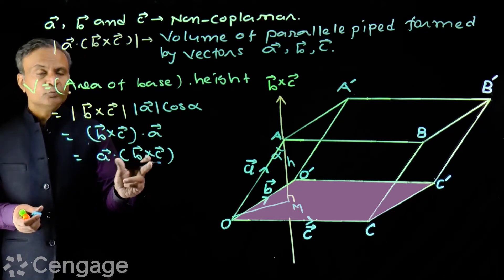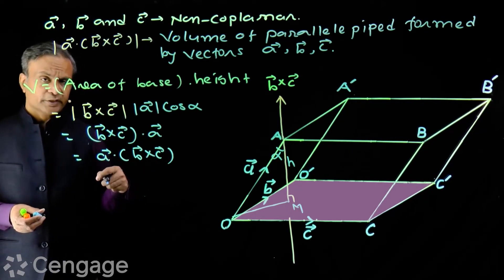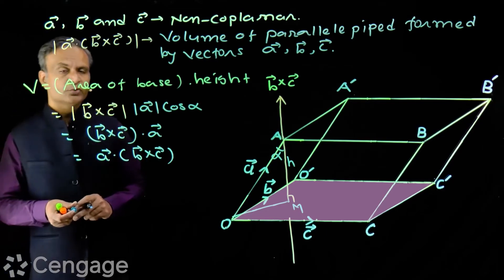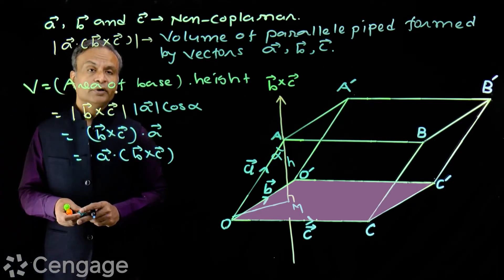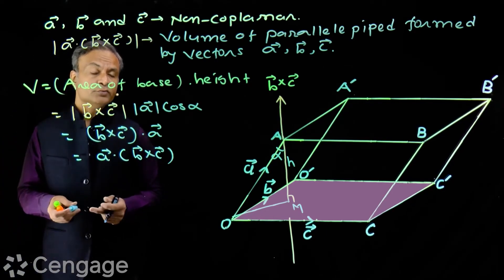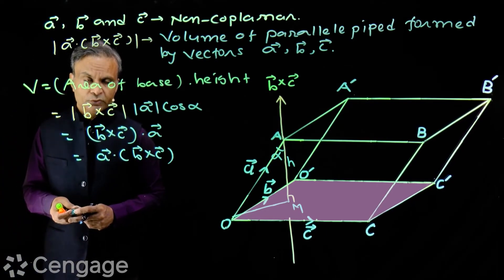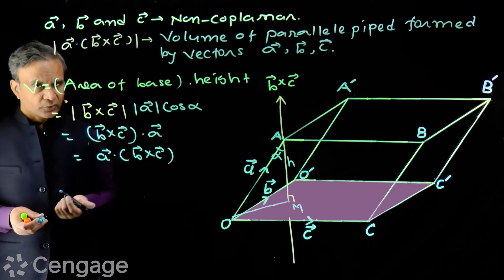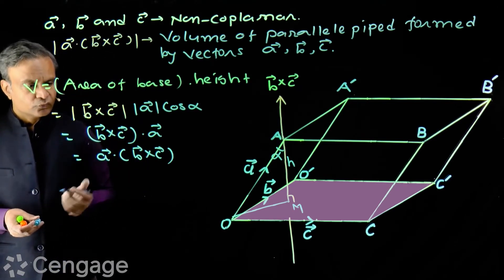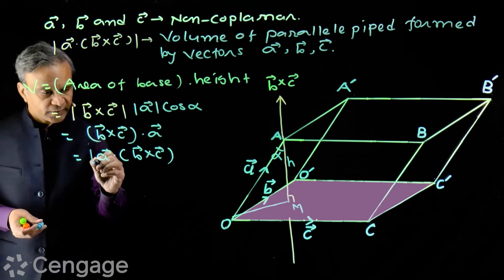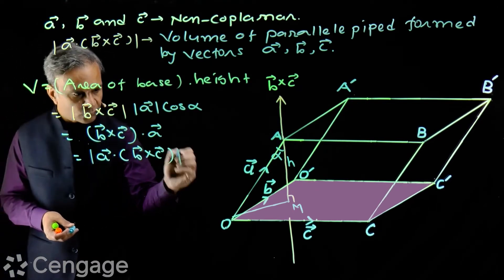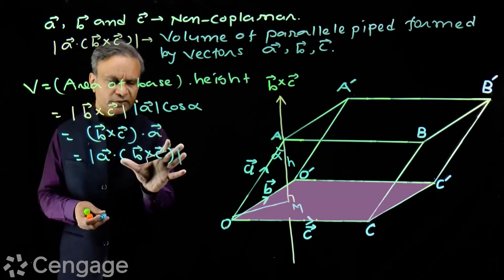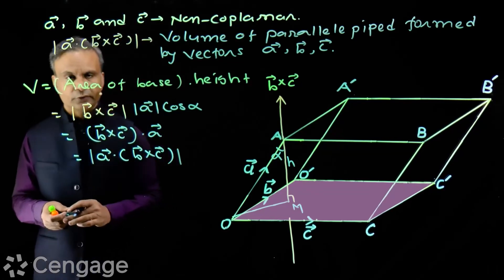This value may be positive or negative — the scalar triple product can be negative. But volume is always positive. So to ensure we always get a positive value for the volume, we apply the modulus, so that the value is always positive.